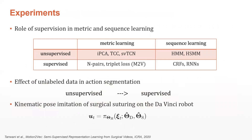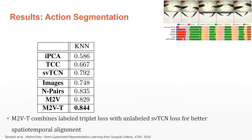We perform experiments to empirically investigate which metric and sequence learning approaches generalize better in terms of segmentation accuracy. We use incremental PCA, TCC, and SVTCN for unsupervised metric learning, and HMM and HSMMs for unsupervised sequence learning. Supervised metric learning approaches include N-pairs and triplet loss, while supervised sequence learning is done with CRFs and RNNs. We also investigate the effect of the relative proportion of labeled examples in semi-supervised learning. M2V combines supervised triplet loss with unsupervised time contrastive loss for better nearest-neighbor accuracy in the embedding space.